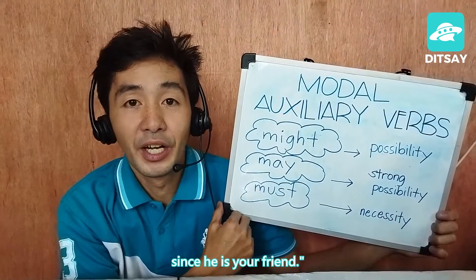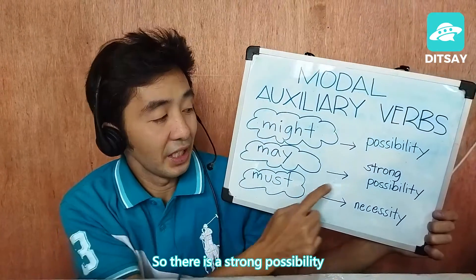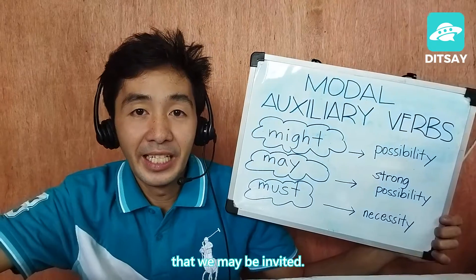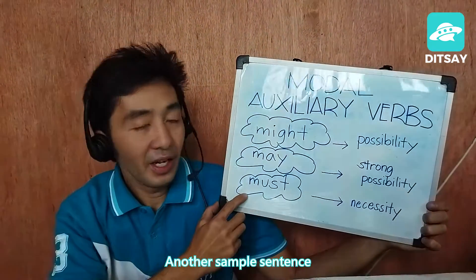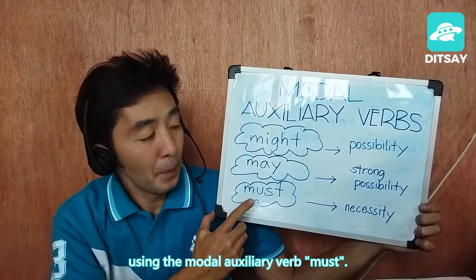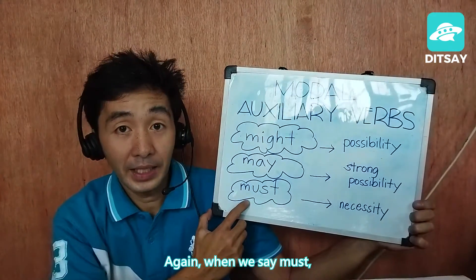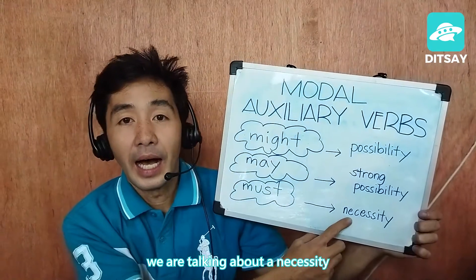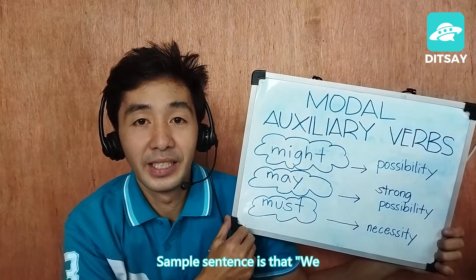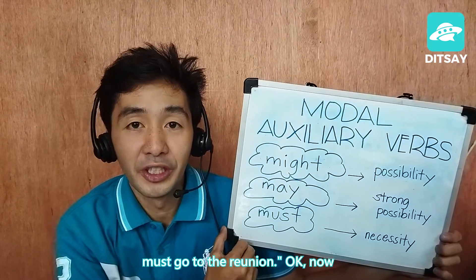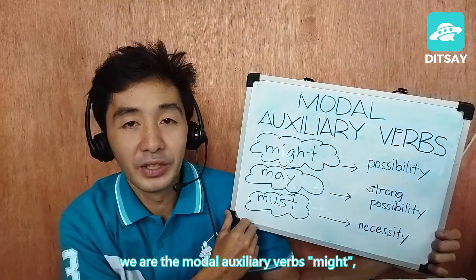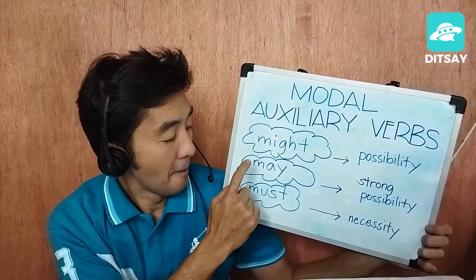The second sample sentence for the modal auxiliary verb 'may' — a strong possibility: 'We may be invited since he is your friend.' So there's a strong possibility that we may be invited. For the modal auxiliary verb 'must,' expressing necessity or obligation, the sample sentence is: 'We must go to the reunion.'